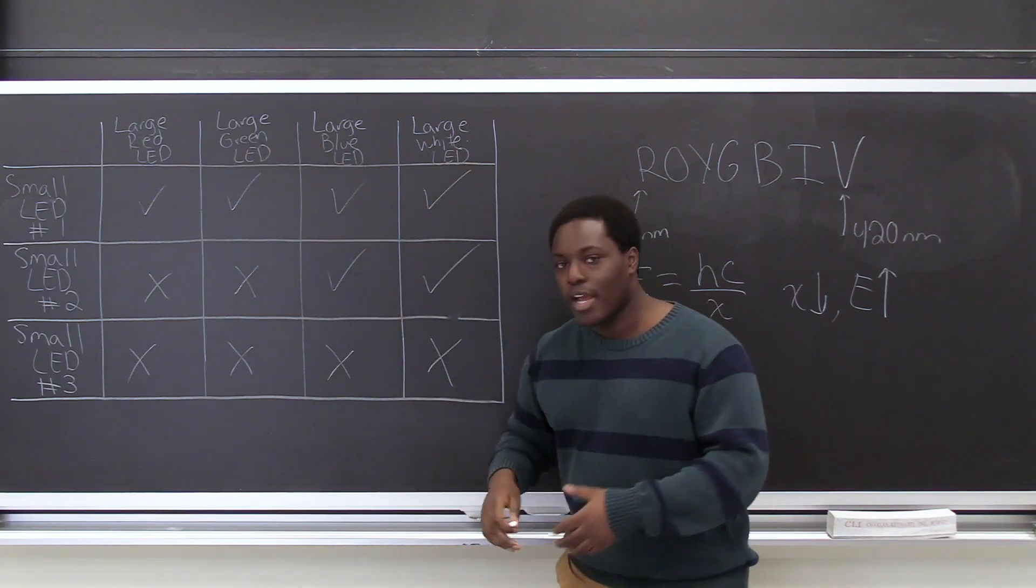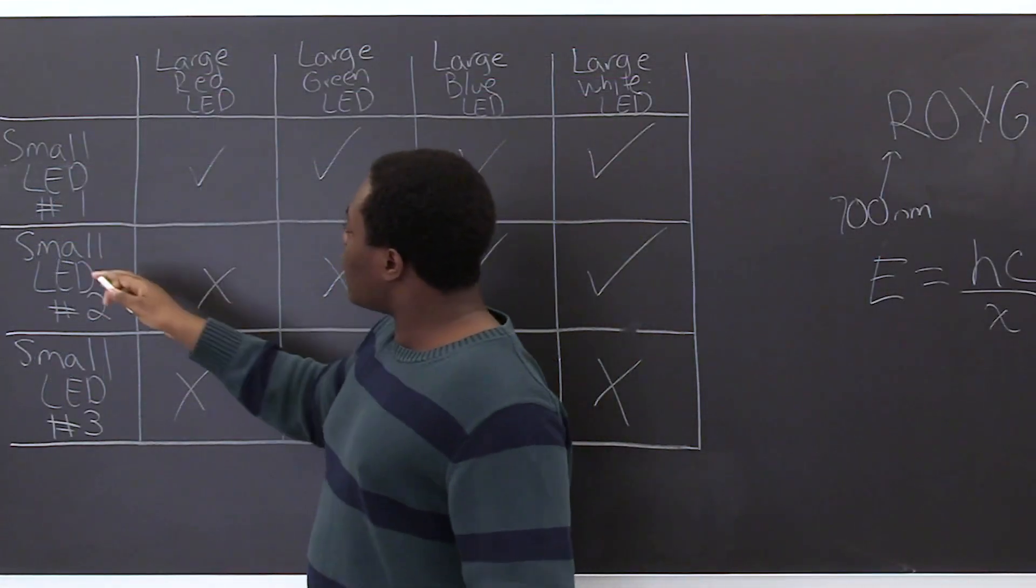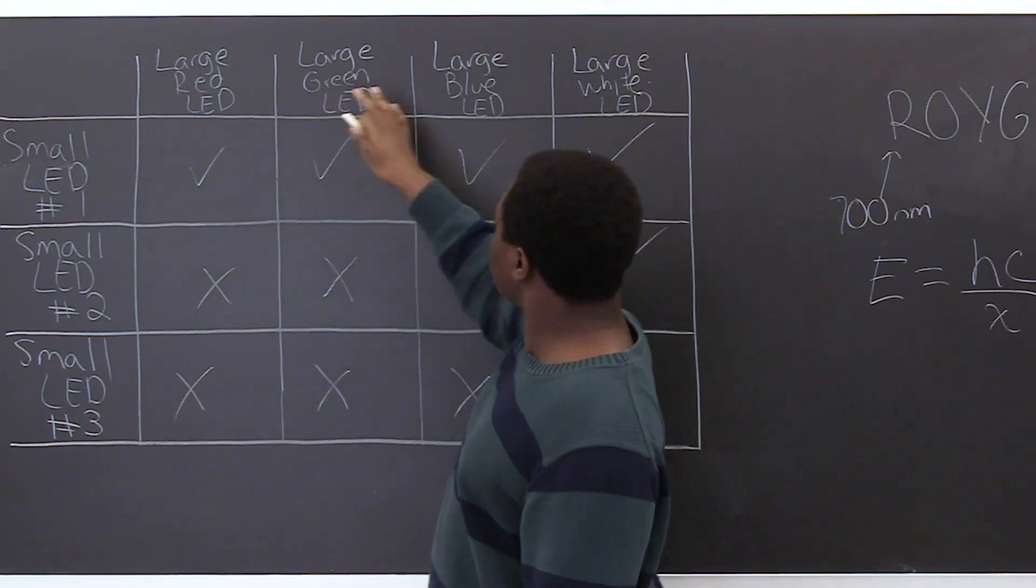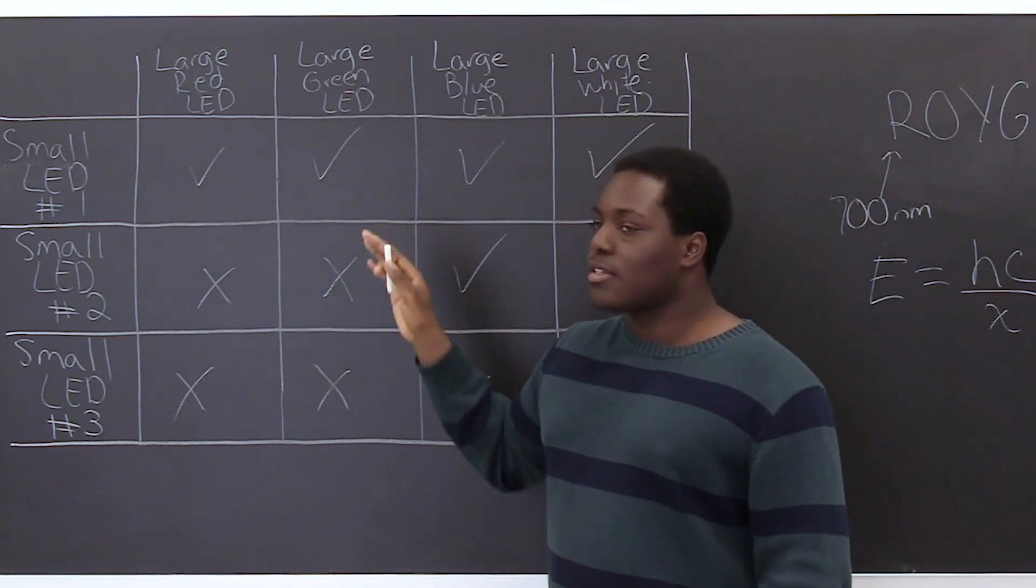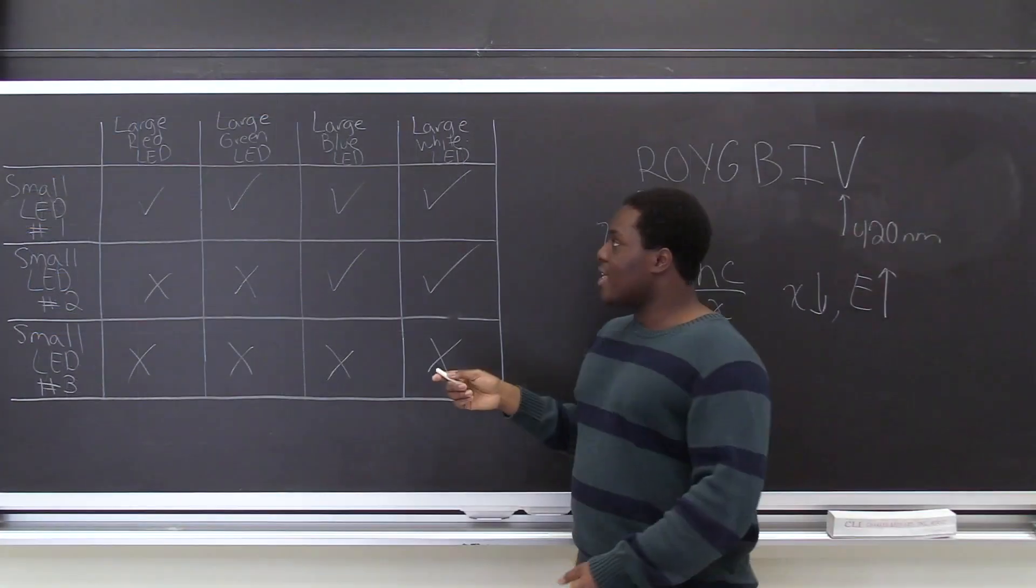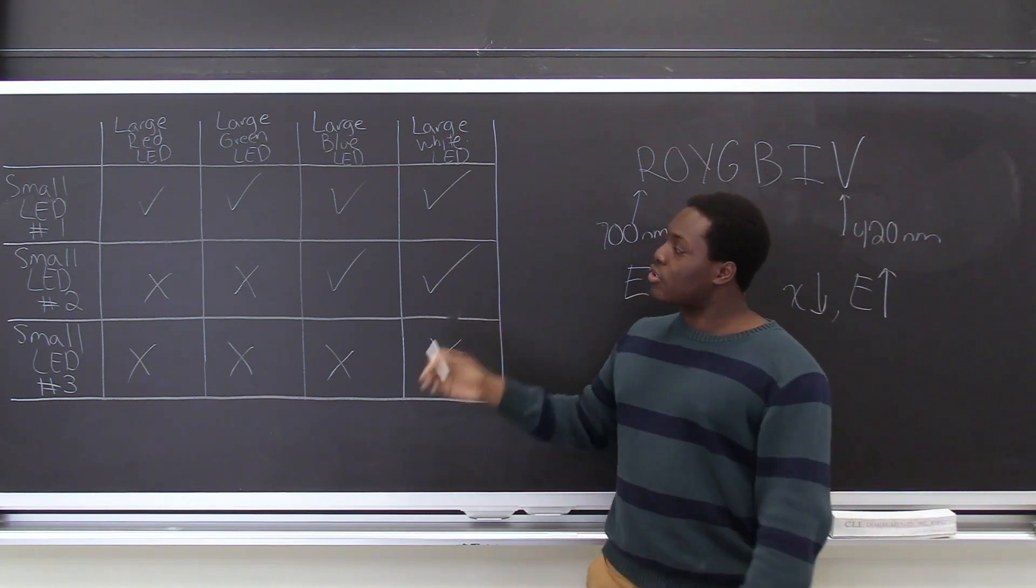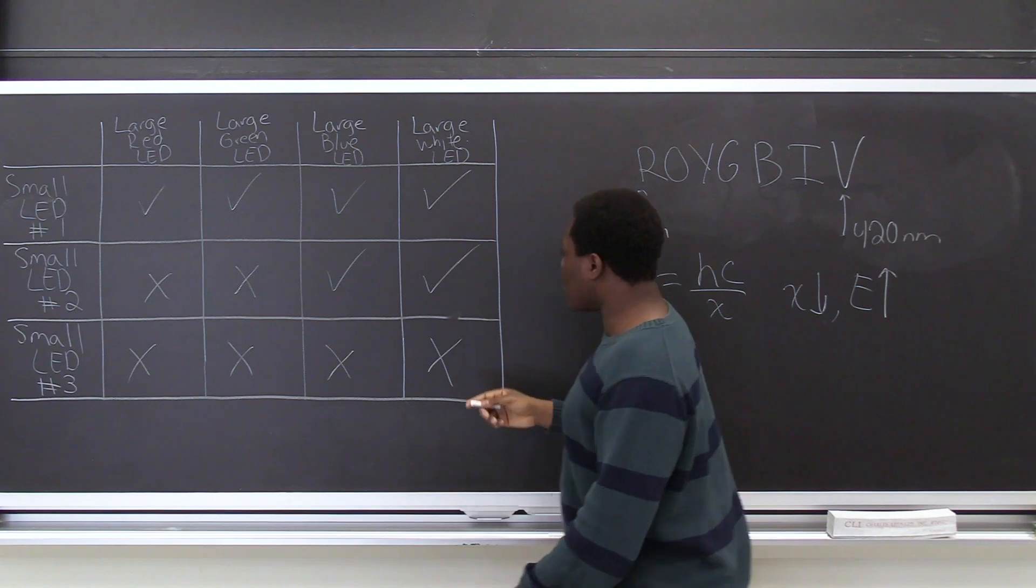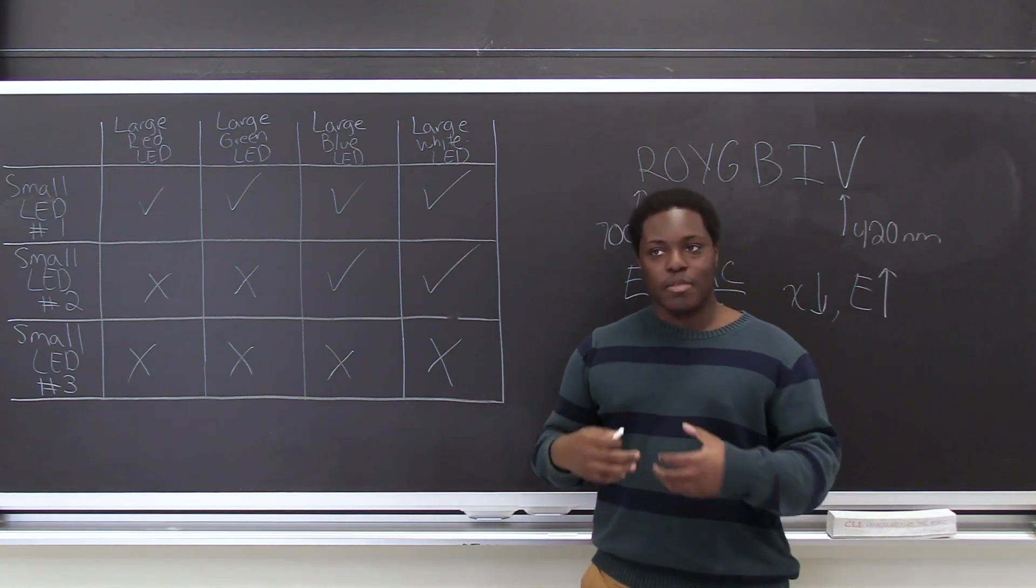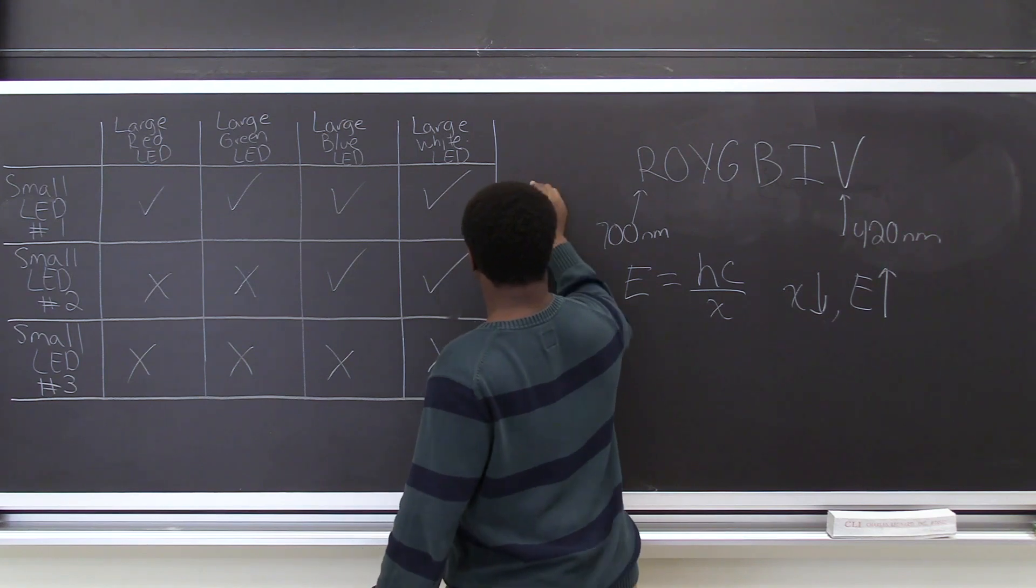So now let's start to identify which LED is what color. So if you look at small LED one it was irradiated by red green blue and white light and there was a voltage drop across the LED for all of them. That means that at the very least red had enough energy to excite electrons across the band gap of that small LED. Because that's the case and we know that we're dealing with LEDs which emit light in the visible light spectrum. We know that this small LED then must be red.